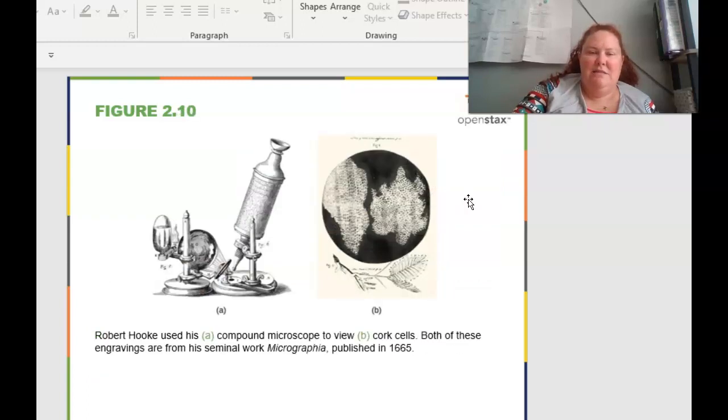He was a very important scientist. So Hooke is one of the guys that was really credited as being a founder of microscopy. And basically he used the compound microscope to look at cork. So both of these engravings are from his seminal, which means groundbreaking work, on microscopy, Micrographia, which was published a long time ago in 1665. And so you can see by using different light sources and focusing in the light, he was able to look at small cells. And this is what the little different cells of a cork look like.